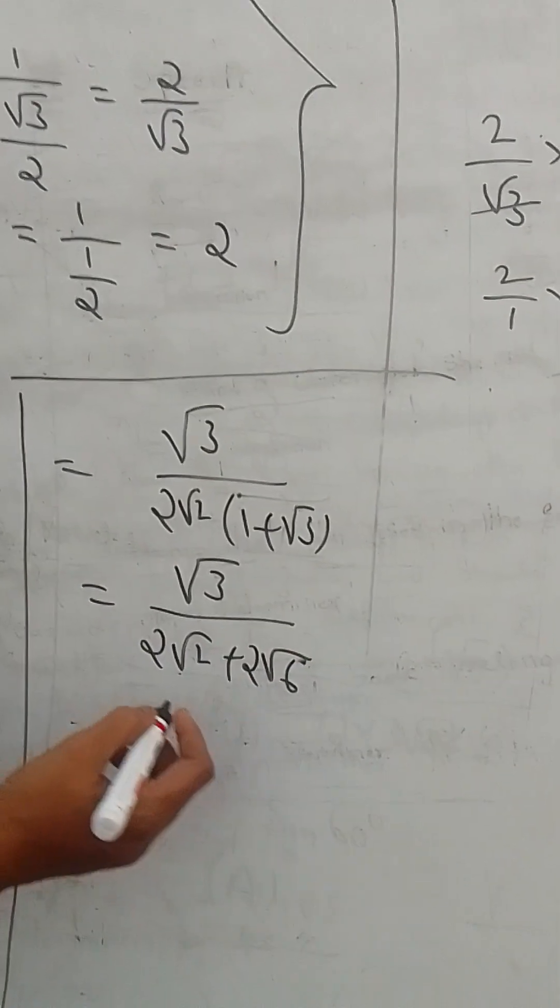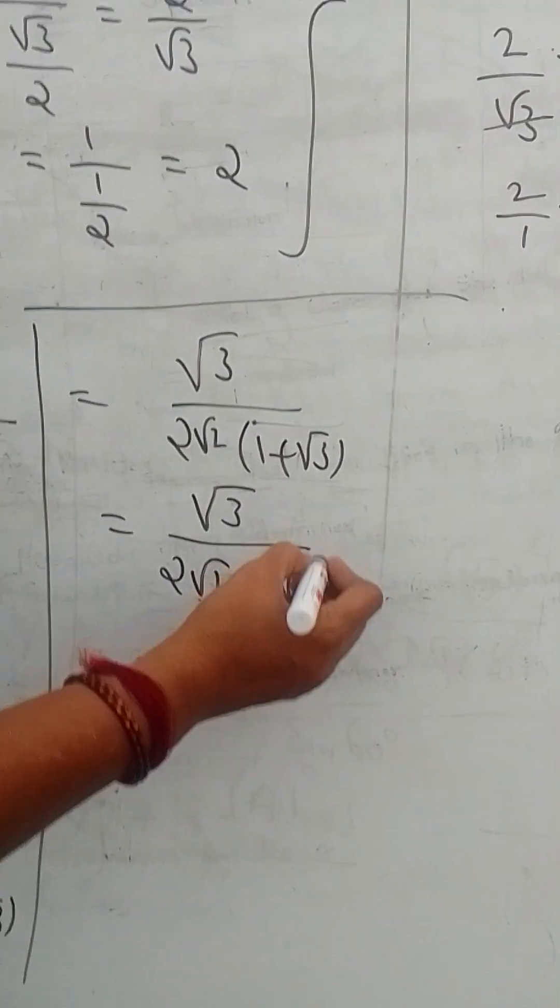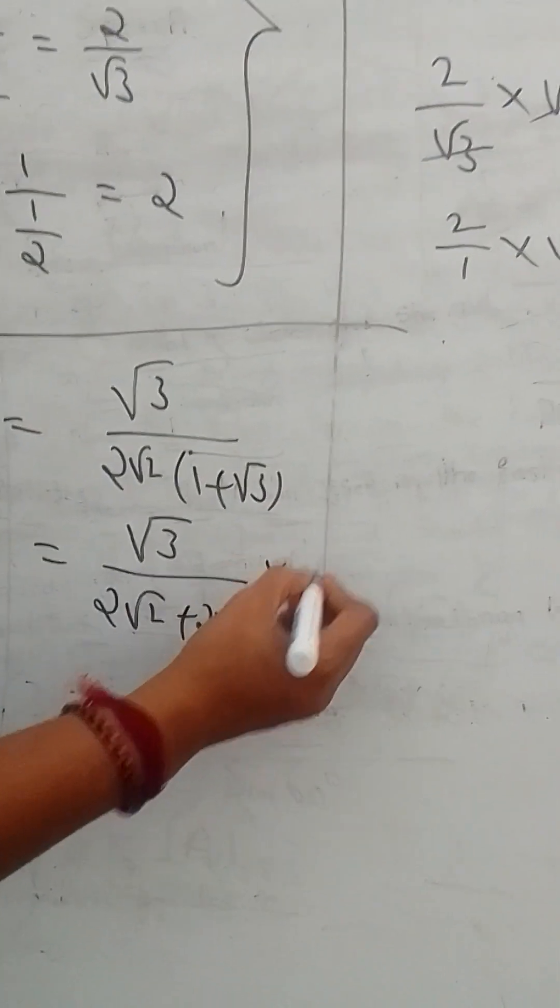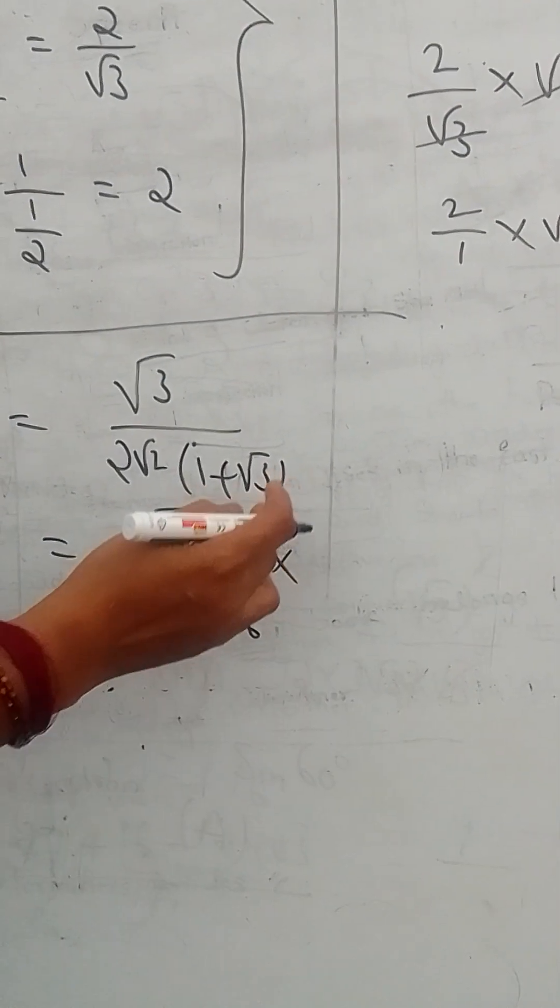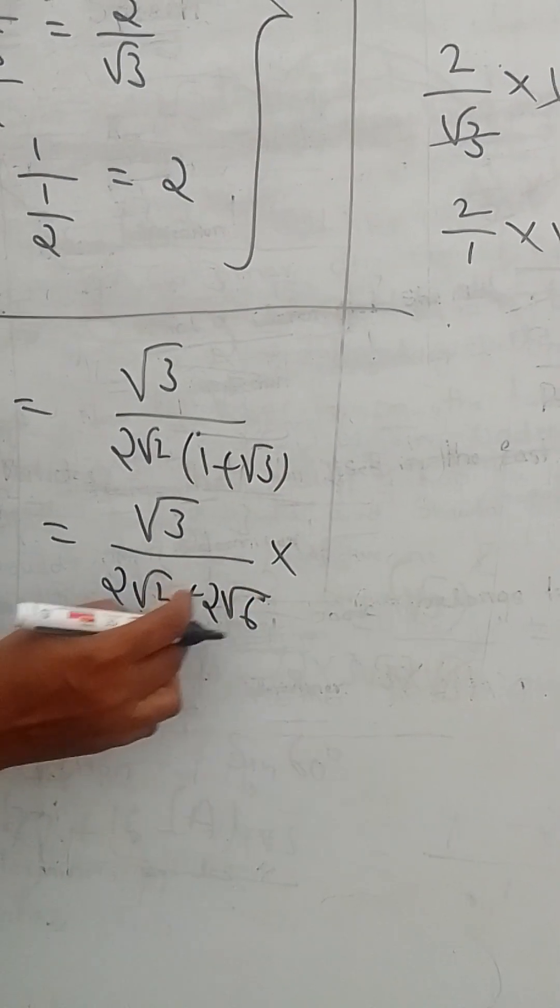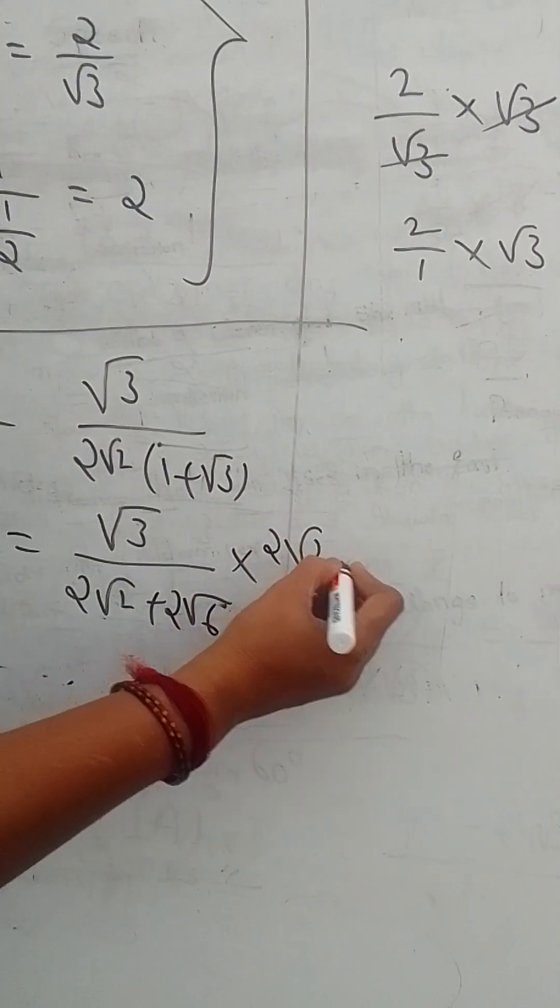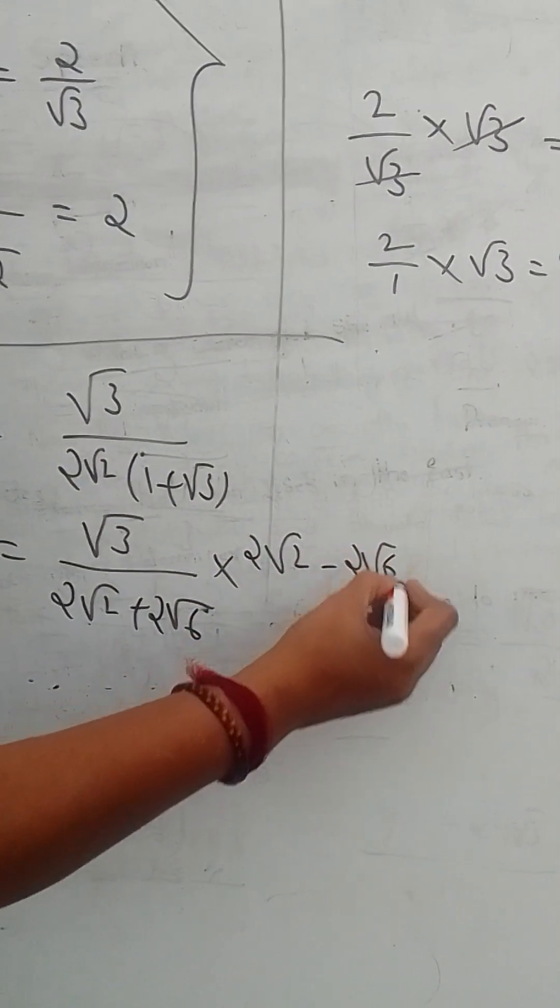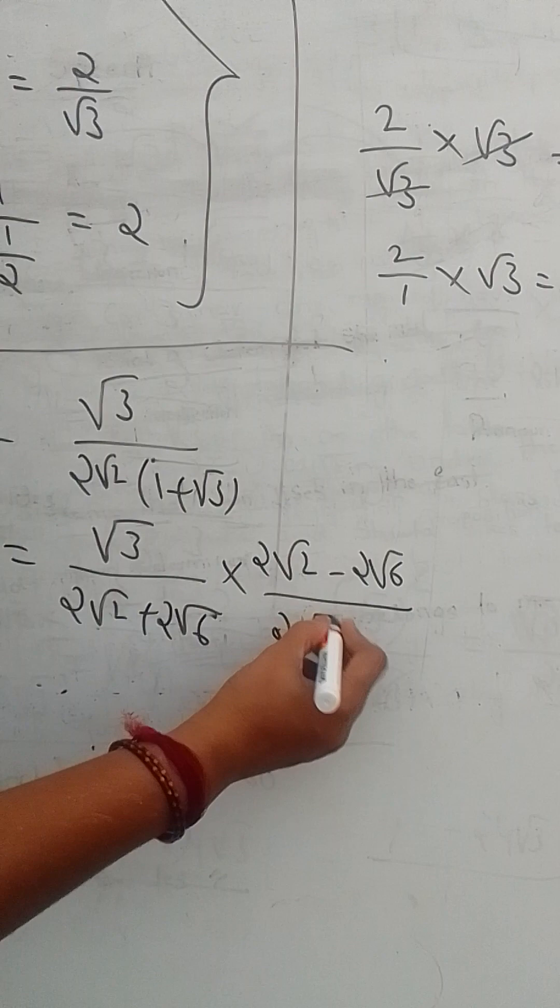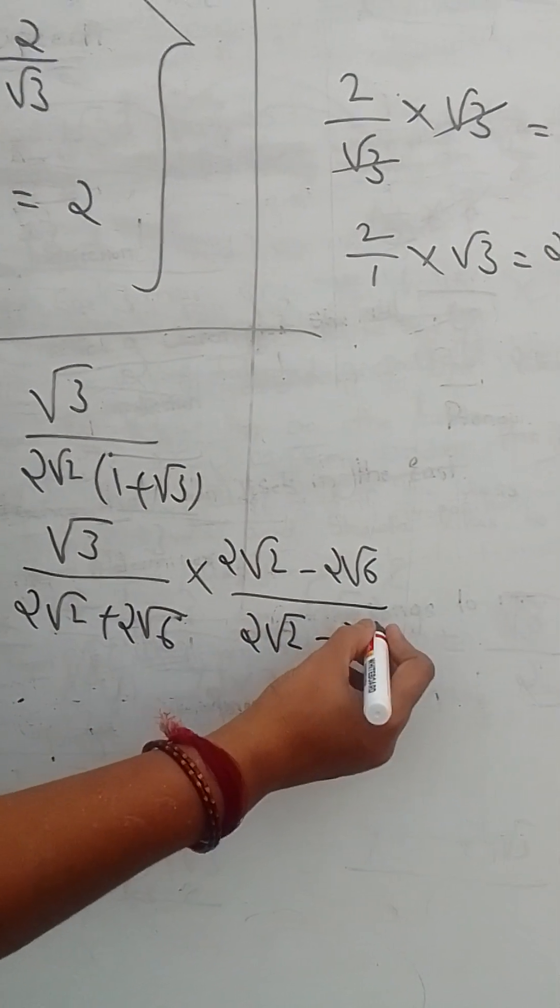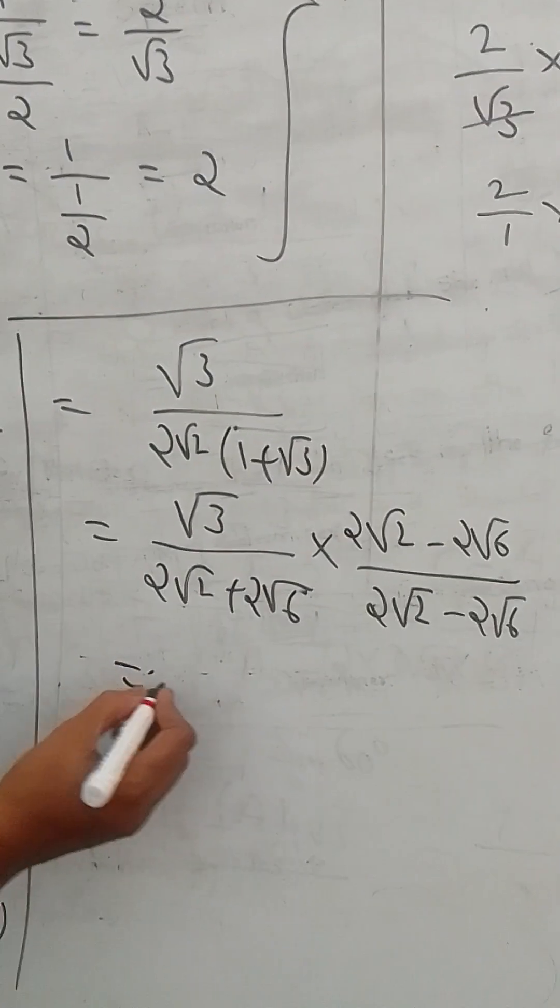Then rationalize the denominator. Conjugate of this one is multiply numerator and denominator by its conjugate: 2 root 2 minus 2 root 6 divided by 2 root 2 minus 2 root 6.